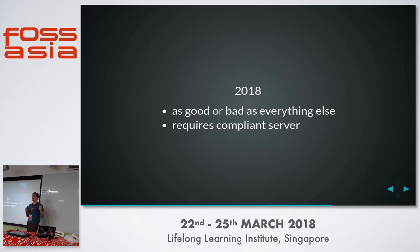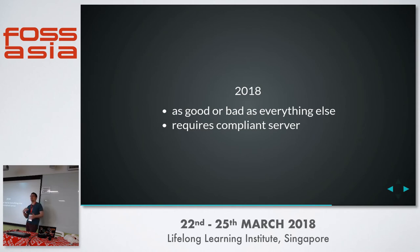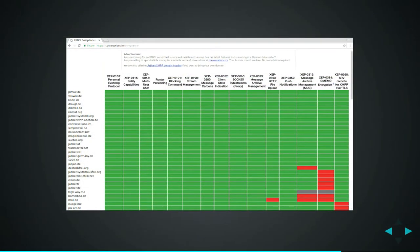A lot of modern extensions came to life in the last five years or so. If you are using a server that hasn't been updated in those five years, your experience will be worse. Conversations will still be able to connect, but a lot of the modern stuff, like fast switches between Wi-Fi and 3G, or battery optimizations, won't work very well. This is especially problematic because a lot of the servers in federated ecosystems are run by volunteers, who tend to set it up once and then forget about it or lose interest. You then have this problem of a fragmented ecosystem with outdated servers that don't support the latest extensions.